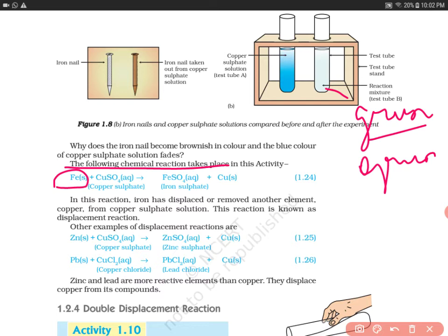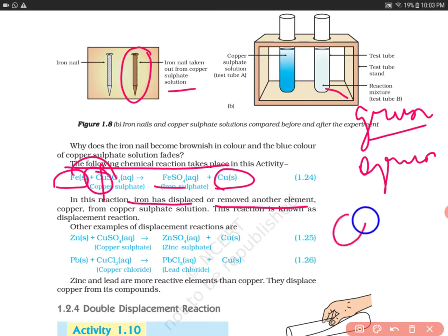In this reaction, iron has displaced copper. The iron takes the place of copper with sulfate, forming ferrous sulfate, while elemental copper is deposited on the iron nail — which is why the iron nail turned brownish. This type of reaction is known as a displacement reaction.